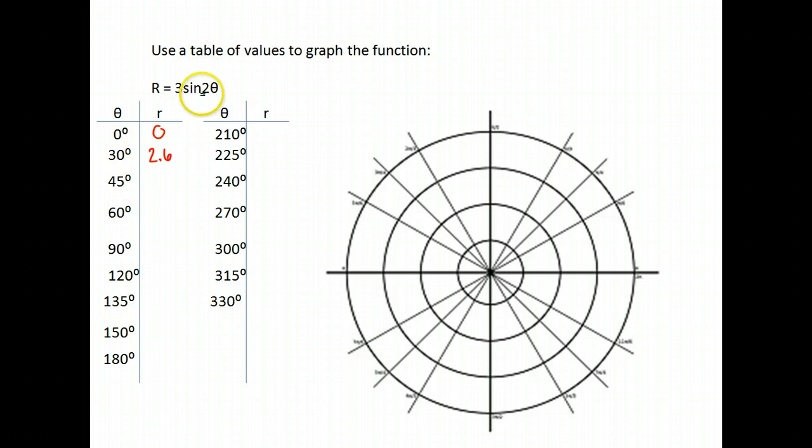45. 2 times 45 is 90. The sine of 90 is 1, and 1 times 3 is 3. 60. 2 times 60 is 120. The sine of 120 is 0.87 times 3 is 2.6.